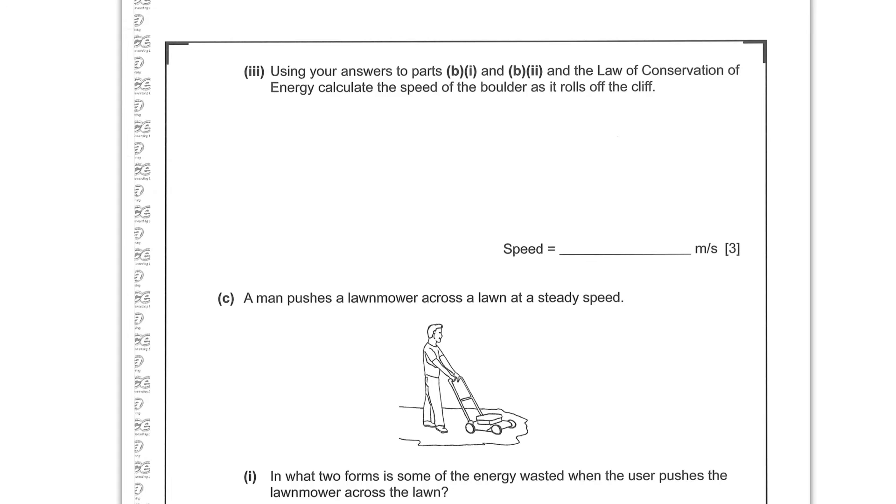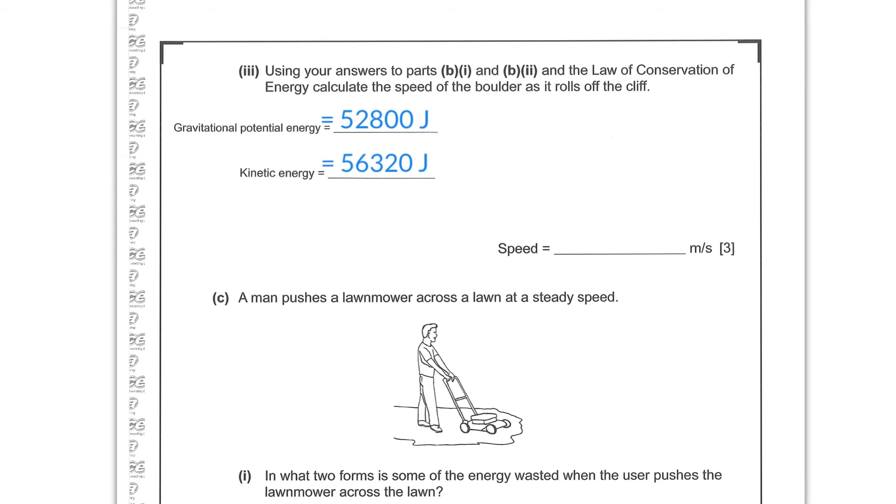Using your answers to parts B1 and B2 and the law of conservation of energy, calculate the speed of the boulder as it rolls off the cliff. So we need to look at these numbers again. We had a gravitational potential energy of 52,800 joules. But by the time it hits the water, it has extra kinetic energy that must have come from it already having some kinetic as it left the hill. So that's what they're trying to find. So the difference between these two numbers is going to be the extra kinetic it had, and that can be worked backwards then to find the speed. So kinetic was present at the top. The difference between these two will give us that. And if we do that calculation, we get 3,250 joules.